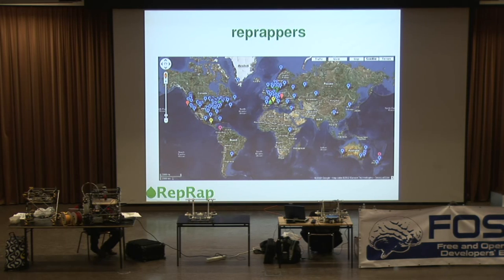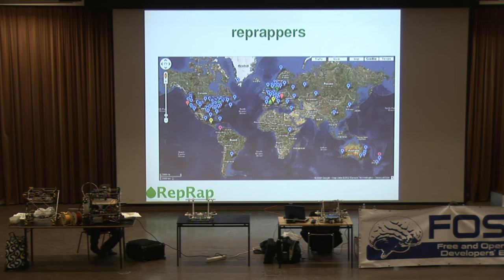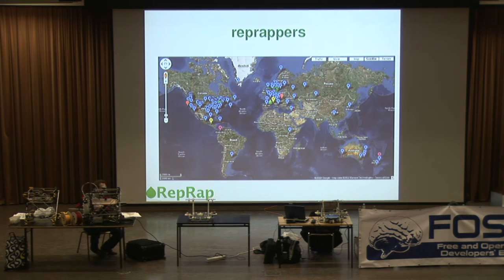The total number of people building machines we don't know, because it's on the web — anyone can download it. I keep discovering people who've built machines whom I've never heard of. The best guess we've got is about 2,500 RepRap machines and RepRap derivatives — that's to say, machines that people have designed based on the RepRap ideas but have either made or sold that are not quite the same design as RepRap.